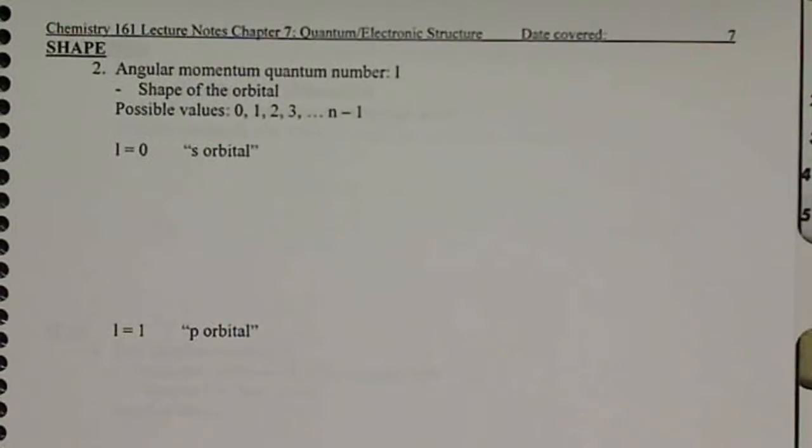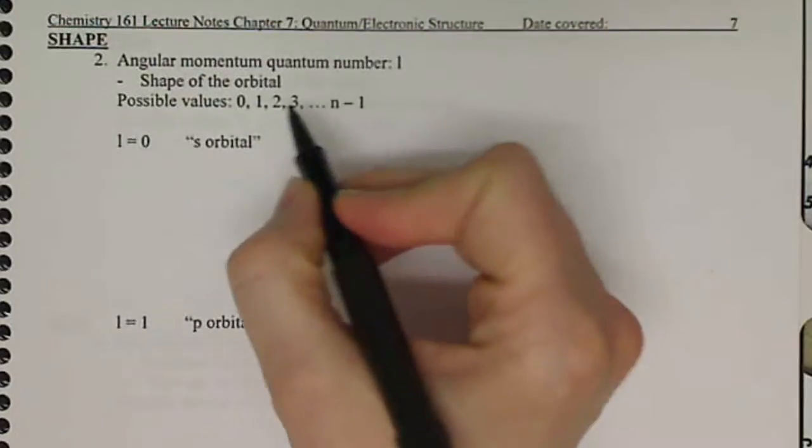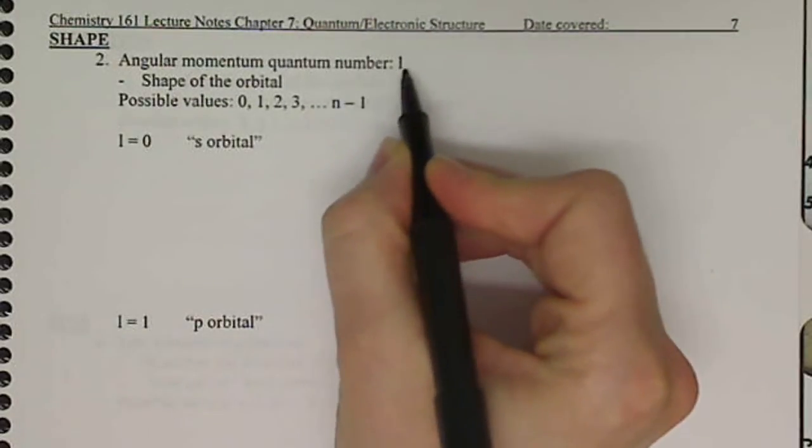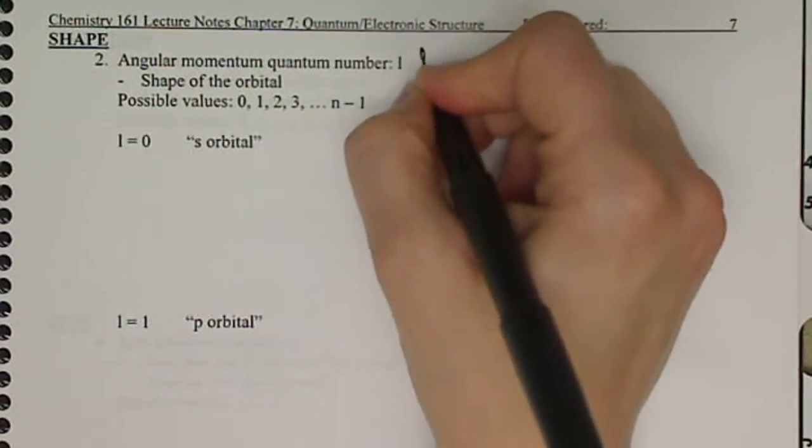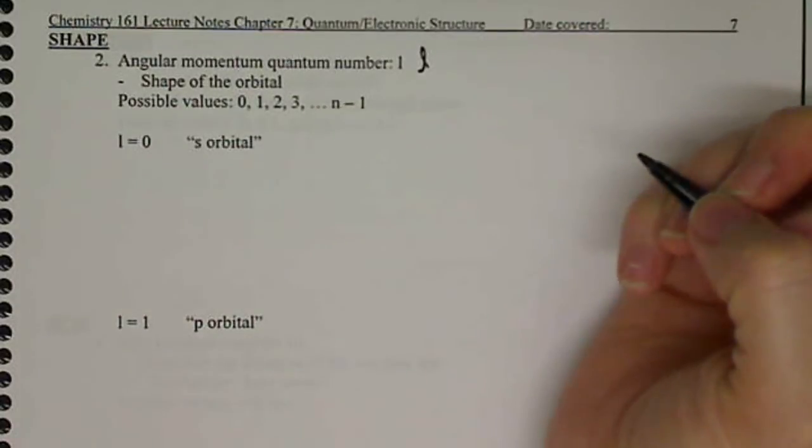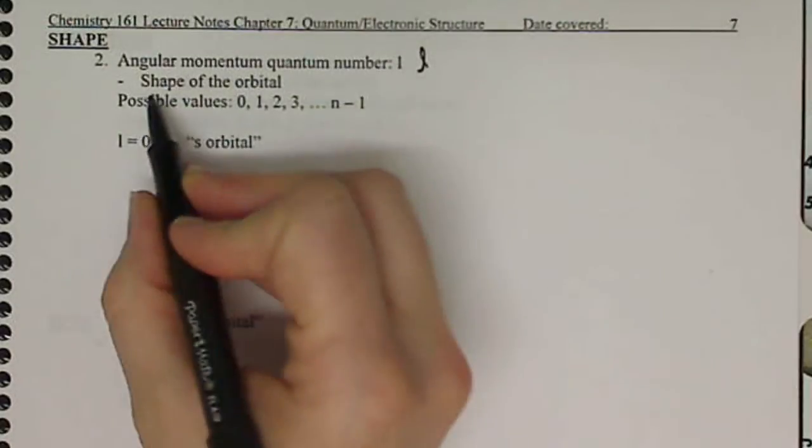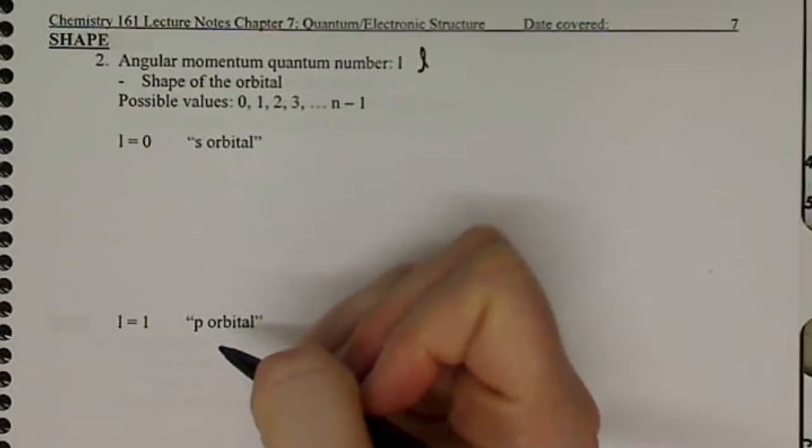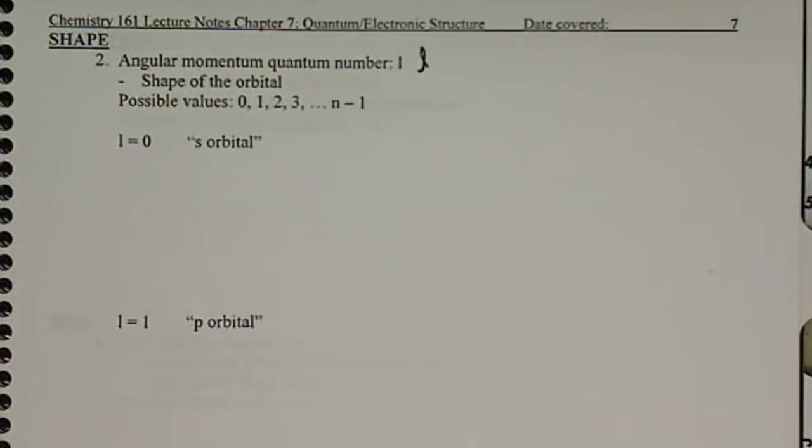Our next quantum number is l, and that's our angular momentum quantum number, lowercase l. So remember I'm going to denote this with a cursive l, and this denotes the shape of the orbital - the shape that the electron is potentially found in.